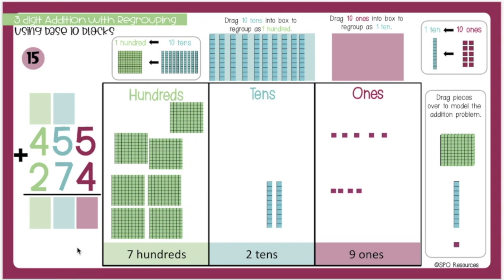Now I will show this problem represented using the standard algorithm. 5 plus 4 is 9. 5 plus 7 is 12, so I have 2 tens here and carry over 1 hundred. 1 plus 4 plus 2 is 7 for a sum of 729.